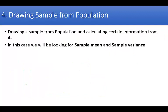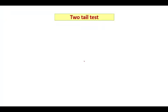The fourth step is about drawing a sample from the population, calculating sample mean and sample variance from the sample, and using these numbers to calculate the value of Z or T. The fifth step is the most interesting and technical topic — finding the critical values for decision making — which we will explain for all three types: two tail test, right tail test, and left tail test.